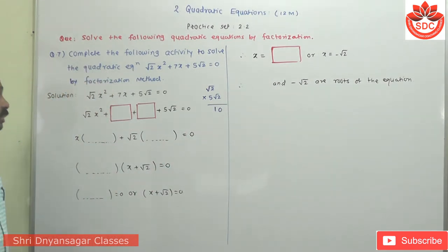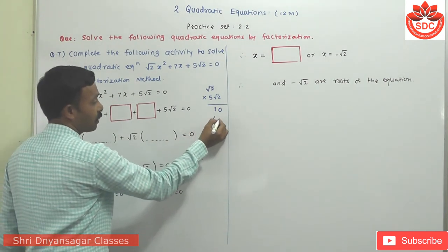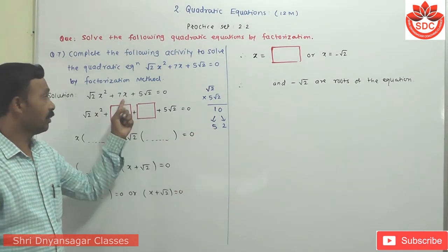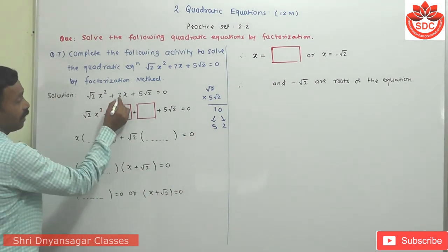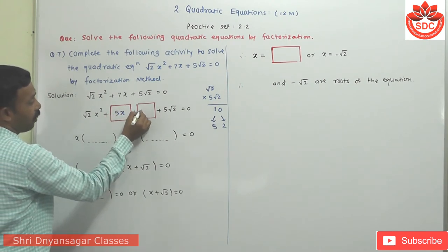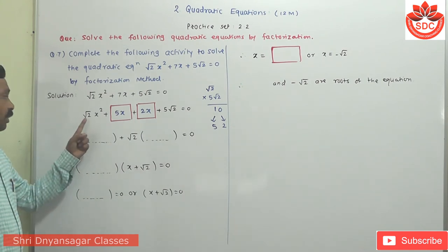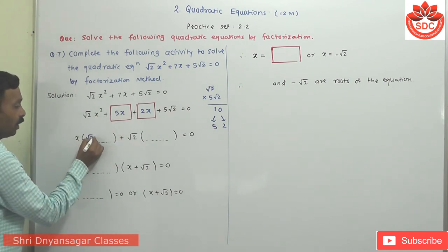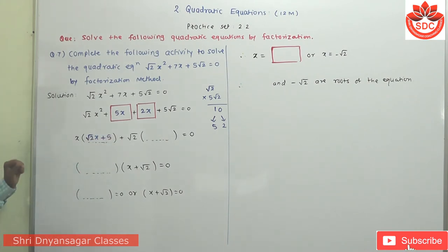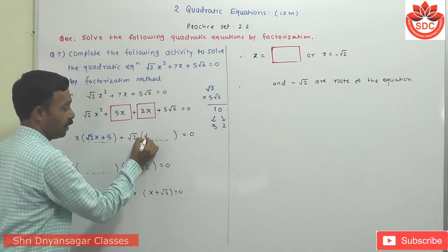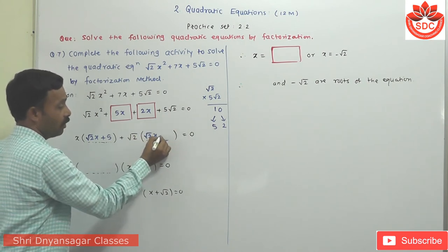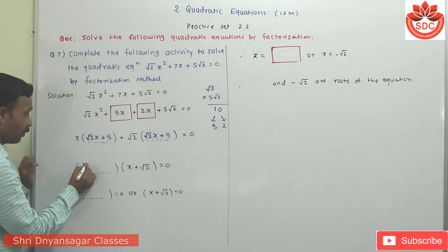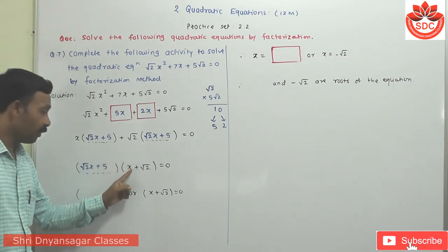The factors: 5√2 × 1 = 5√2 — no, rather 5 and 2: 5 × 2 = 10 and 5 + 2 = 7. So split the middle term into 5x and 2x. The equation becomes √2·x² + 5x + 2x + 5√2 = 0. Take x common from first group: x(√2·x + 5). Take √2 common from second group: √2(x + 5). Then take common bracket (√2·x + 5)(x + √2) = 0.